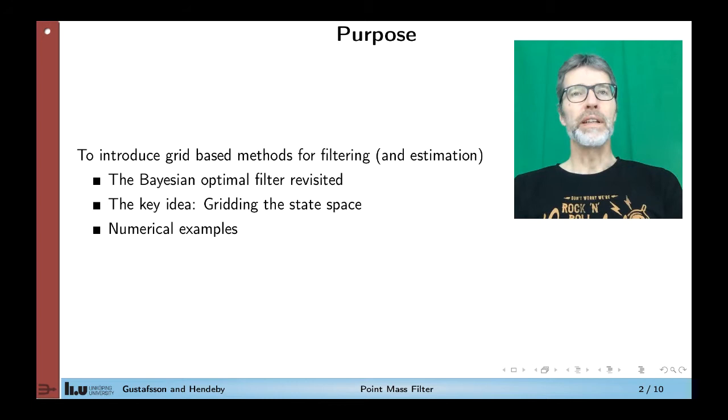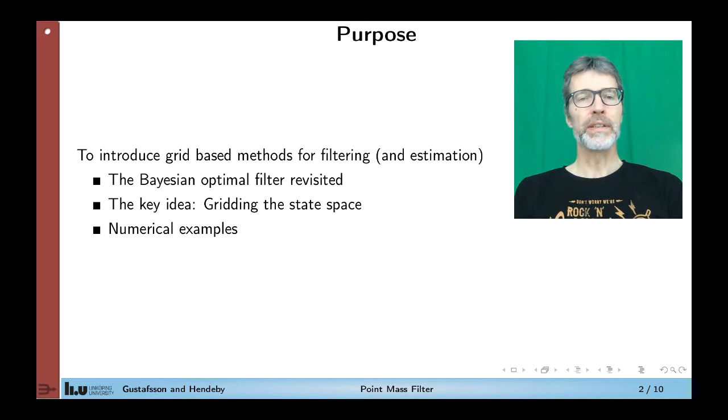So the key idea in a point mass filter is to grid the state space and evaluate the Bayes optimal filter on this gridded state space. We will derive the filter and its implementation and also show some numerical examples.